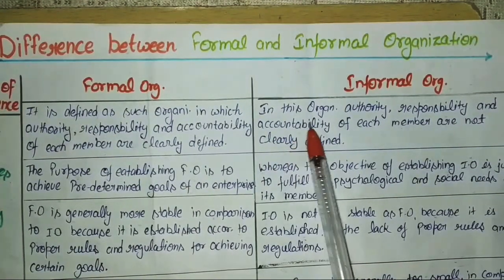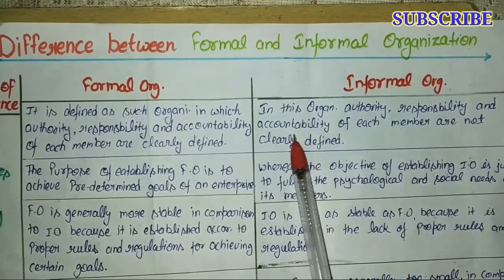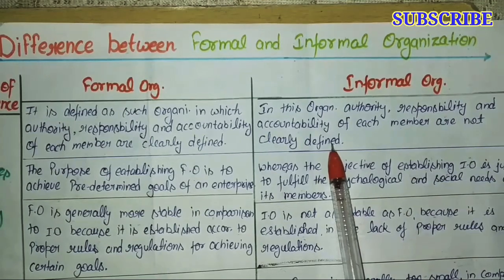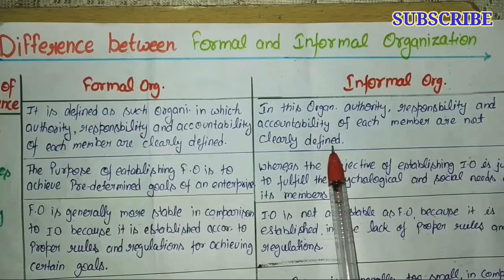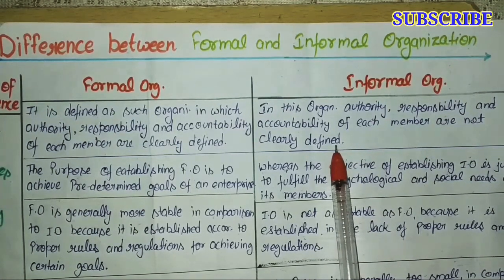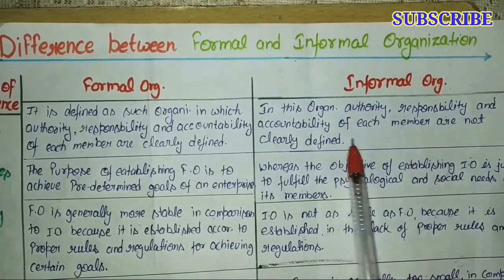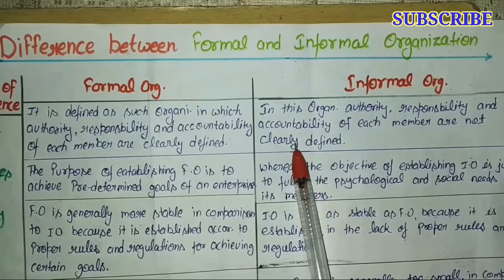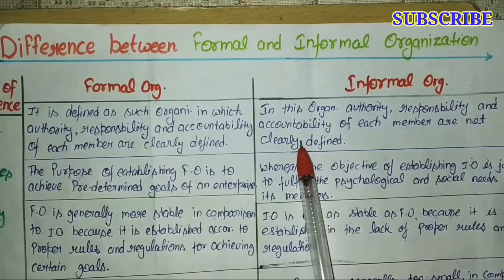On the other hand, in informal organization, authority, responsibility and accountability of each member are not clearly defined. Informal organization is one where no member has a formally assigned role — here normally only casual conversation happens and it is a simple organization without any rules.